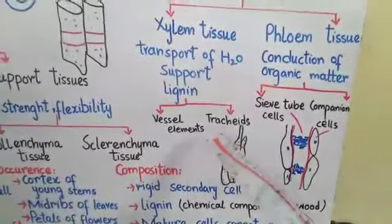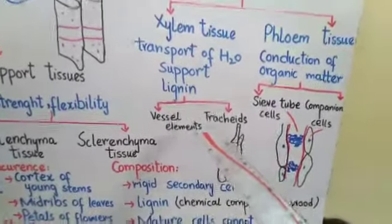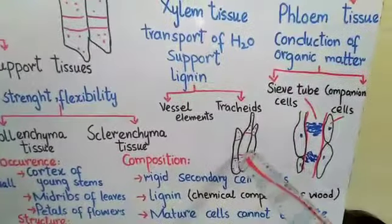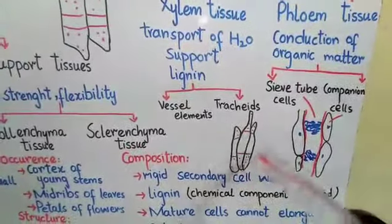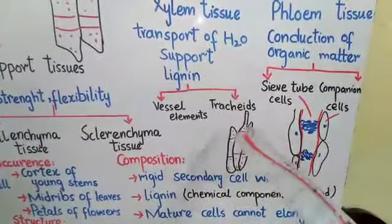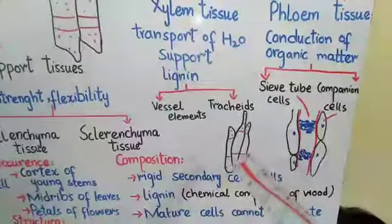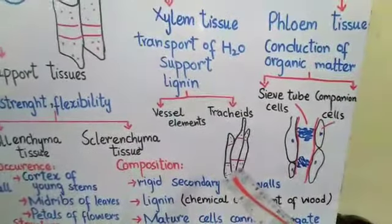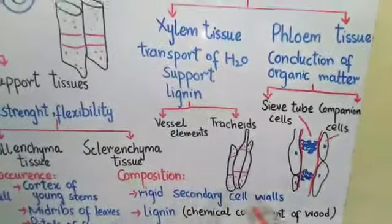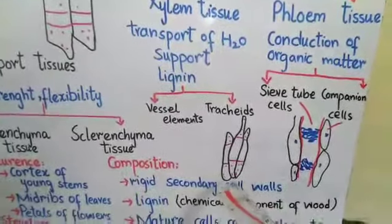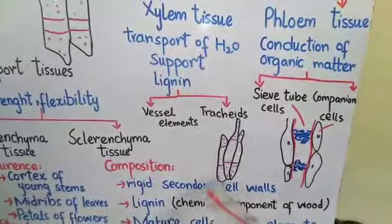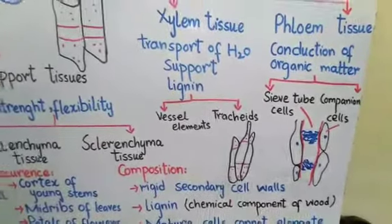The second type of xylem cell is the tracheid. Tracheids are cylindrical cells with overlapping ends, where the ends overlap with each other.